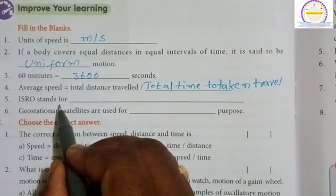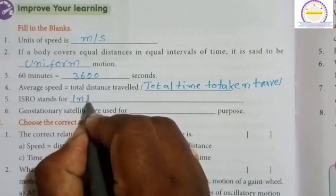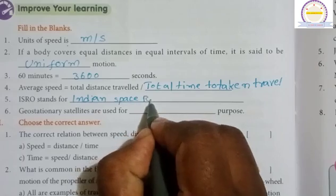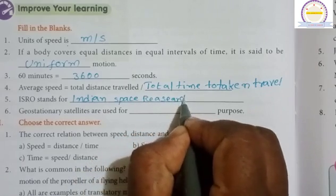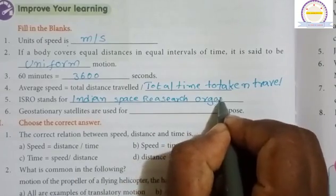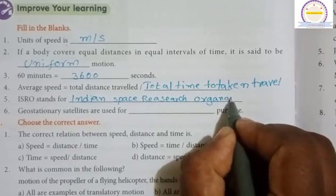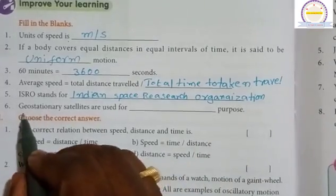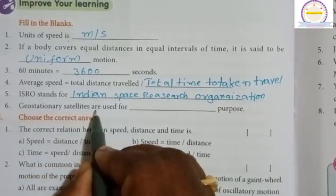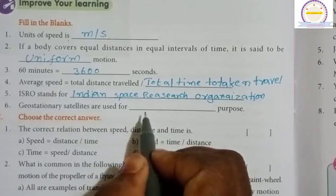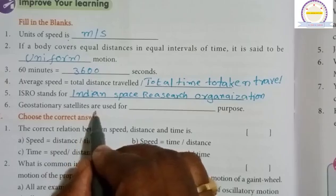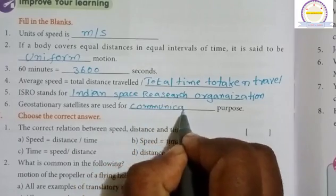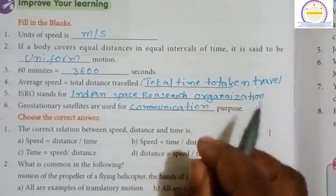ISRO means Indian Space Research Organization. Geostationary satellites are used for communication purpose.